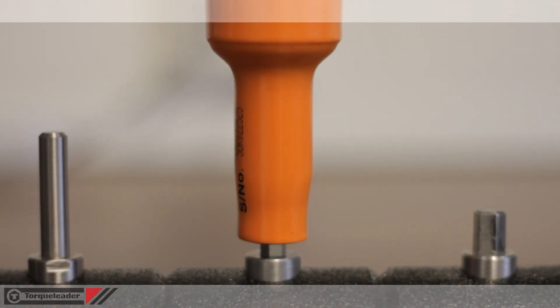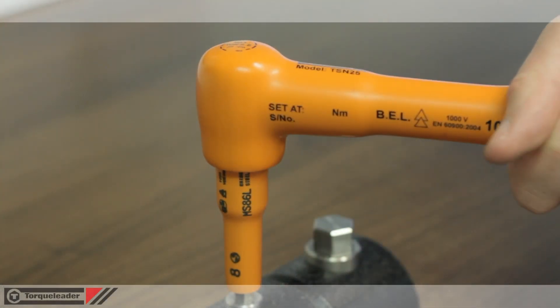The slipping and braking mechanisms clearly indicate when the set torque has been achieved.